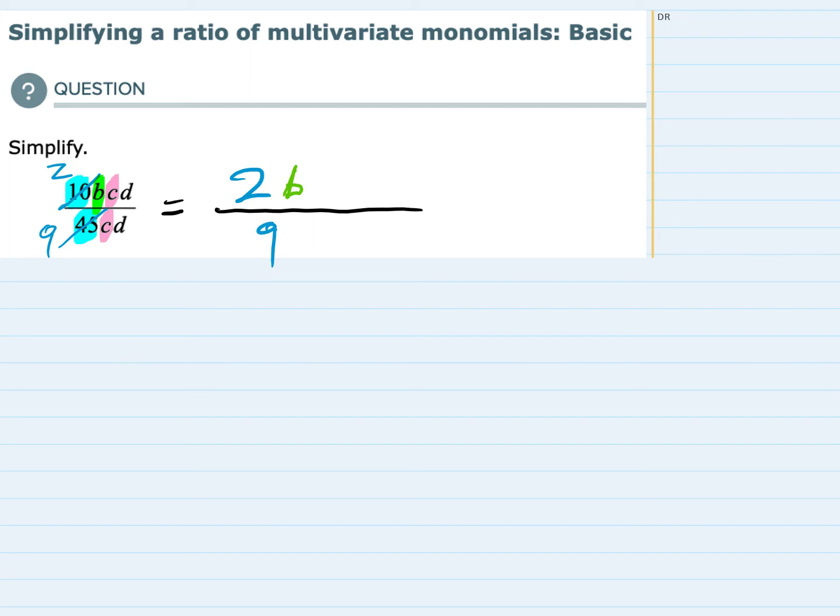So our simplified expression isn't going to have any c's. And then for this example the same is true for the d's. There's a d in the top and a d in the bottom. Those are going to cancel each other out. So there are no d's in our simplified expression either.